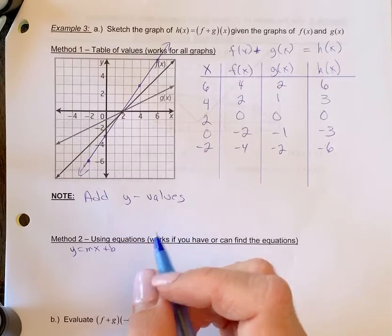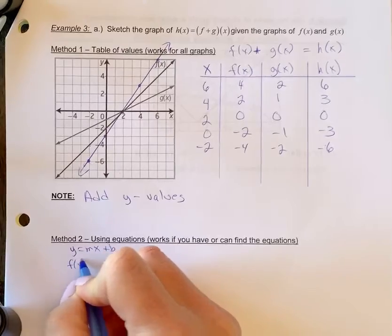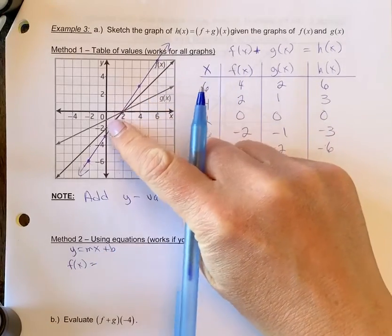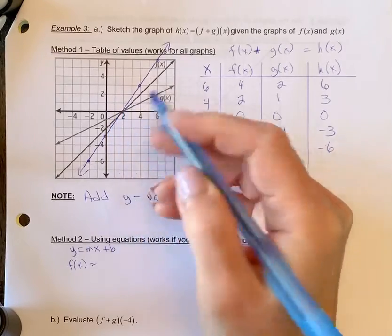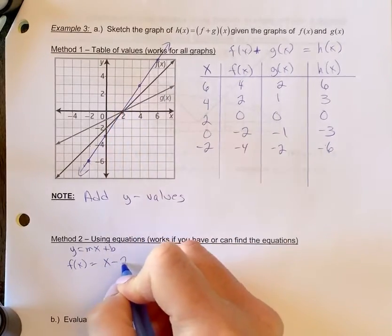If we take a look at f of x graph, we had a y-intercept of negative two. And if you count the slope, we went up one, right one, up one, right one. So this is the equation x minus two.